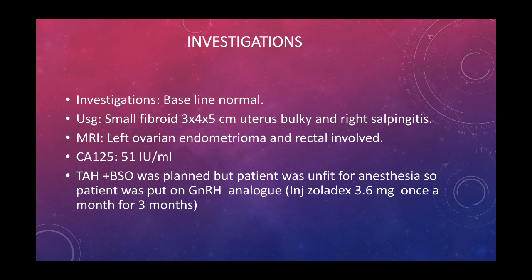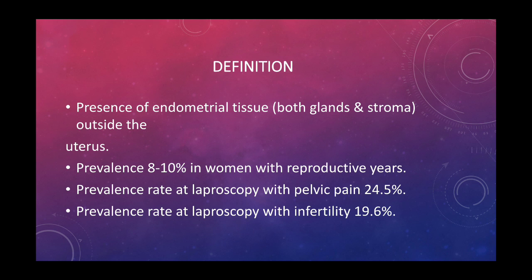Now coming to the definition of endometriosis: endometriosis means the presence of endometrial tissue — both glands and stroma — outside the uterus. The prevalence of endometriosis is 8 to 10 percent in women of reproductive years. The prevalence rate at laparoscopy with pelvic pain is 24.5 percent, and the prevalence rate at laparoscopy with infertility is 19.6 percent.